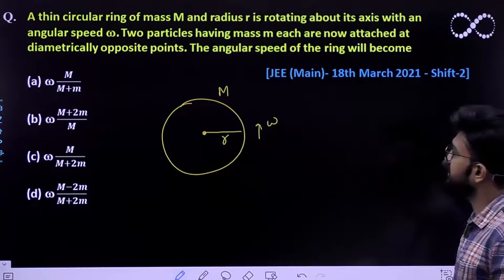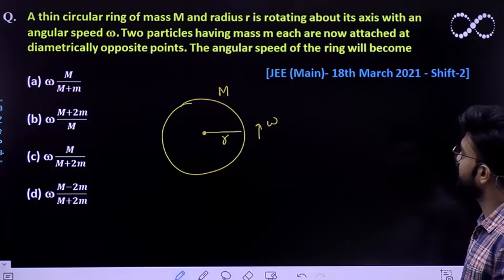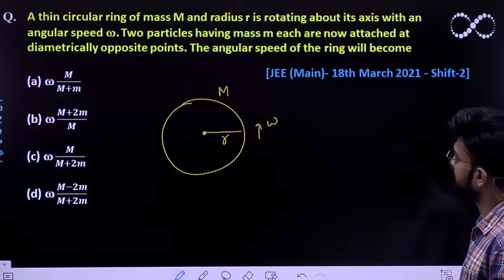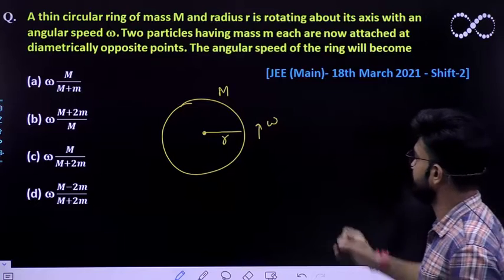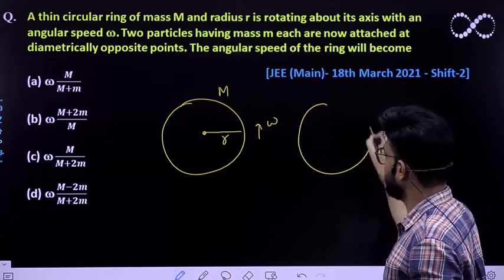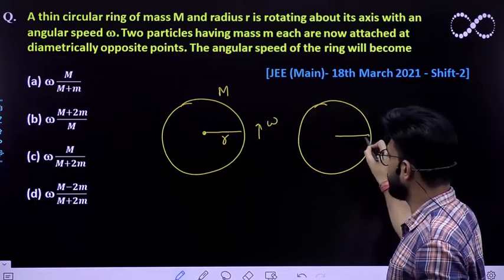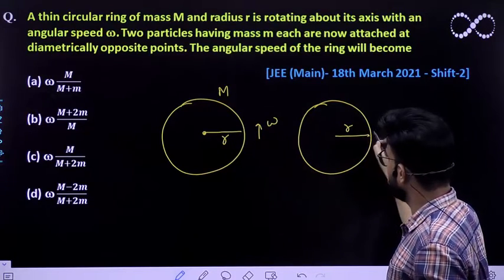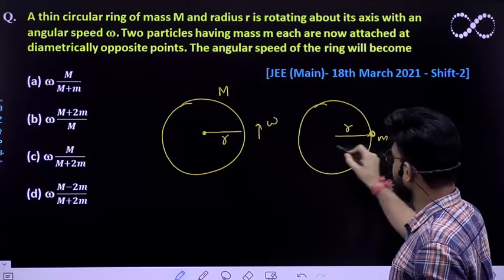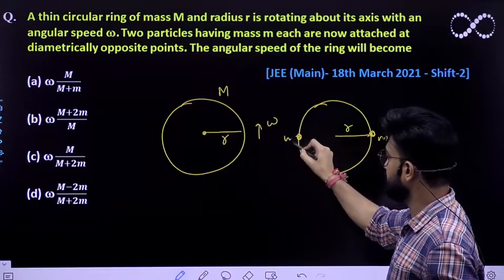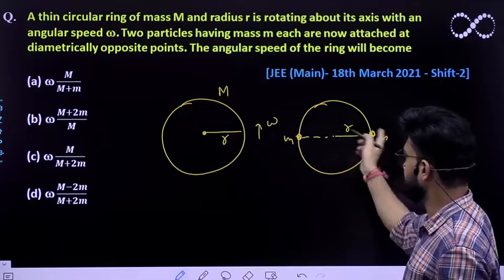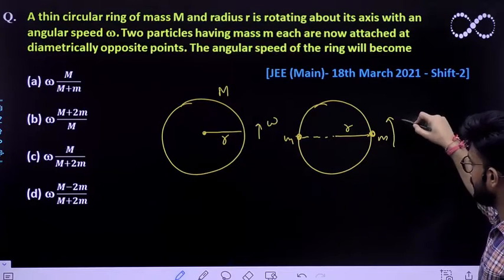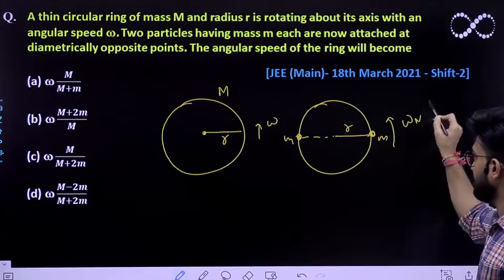Two particles having mass small m each are now attached at diametrically opposite points. The angular speed of the ring will be - now see, in the same ring it was rotating with angular speed omega. Now two masses small m each have been placed diametrically opposite. What would be the new angular speed that you need to find out?